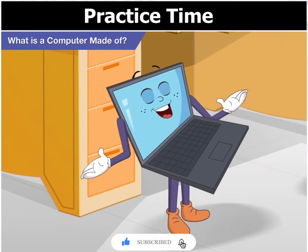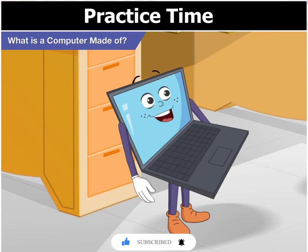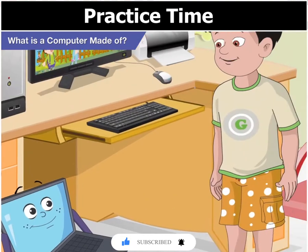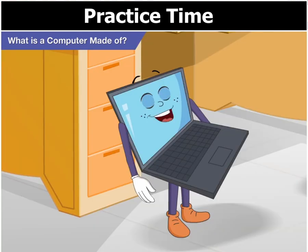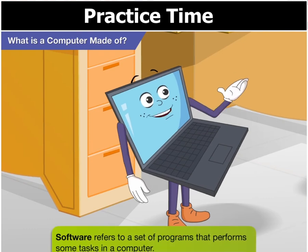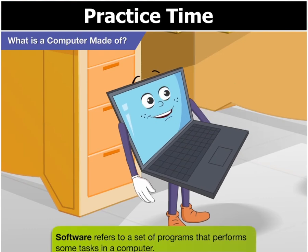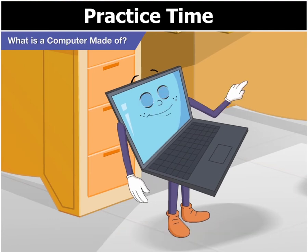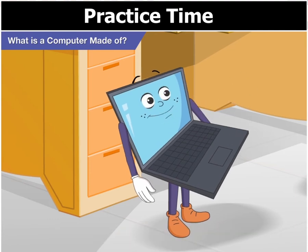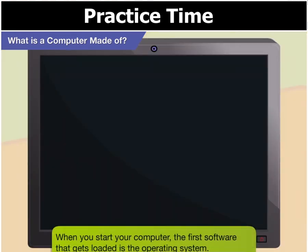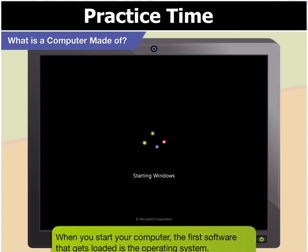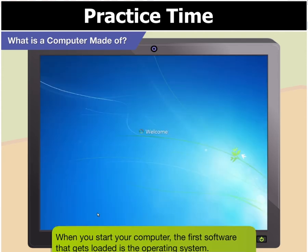Let us now understand what software is in a computer. The term software refers to a set of programs that perform some tasks in a computer. An operating system, as I said earlier, is also a kind of software. When you start a computer, the first software that gets loaded is the operating system. Here, you are seeing the MS Windows 7 software getting loaded.